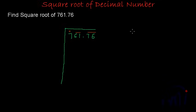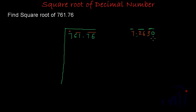Suppose you have to find the square root of 7.263. Here also you will start from the decimal point. Going towards left, 7 will make one group. Going towards right, 2 and 6 will make one group, and 3 will be alone — but you can add a 0 to make a group of 2, because adding 0 doesn't change the value of the number; it helps in finding the square root. Adding 0 is allowed on the right-hand side of digits after the decimal point, but you cannot add zeros to the left side — you can't make it 70.